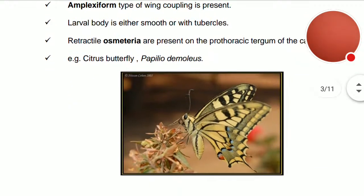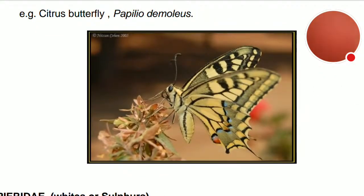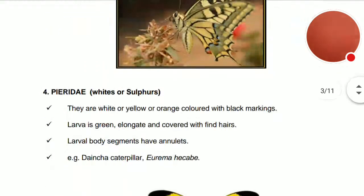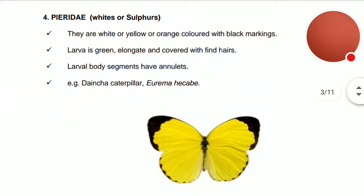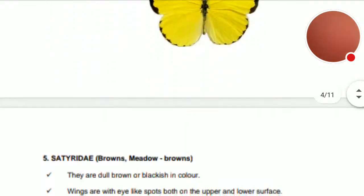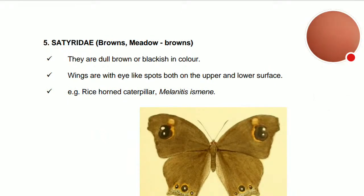Pieridae — called the whites or sulphurs — are white, yellow, or orange colored with black markings. The larvae are green, elongate, and covered with fine hair. The larval body segments have annulations. Example: the dagger caterpillar, Utetheisa hikabi (scientific name).